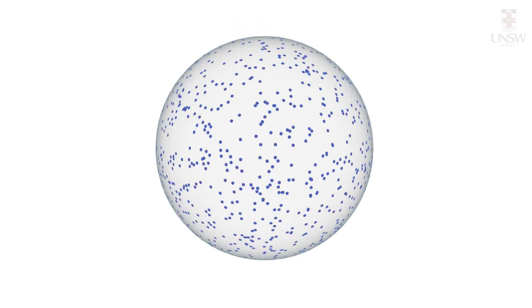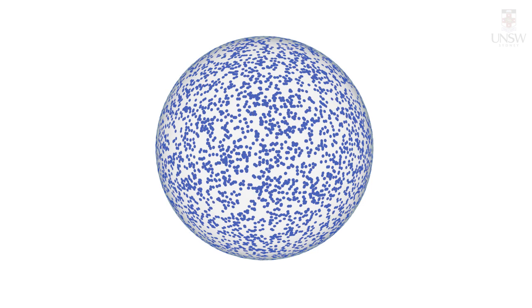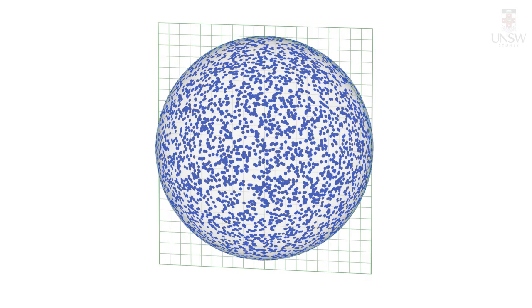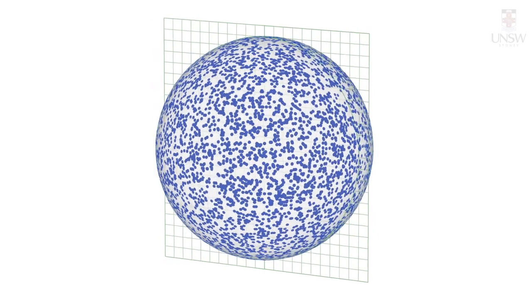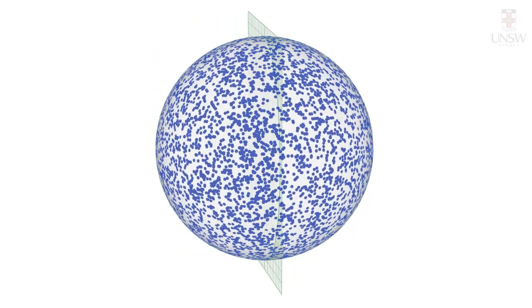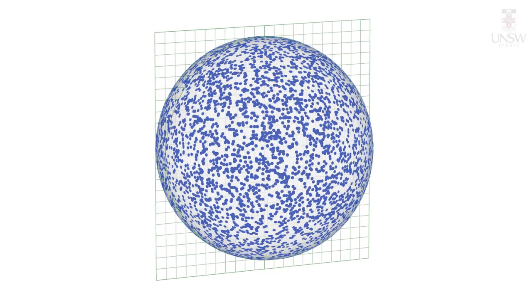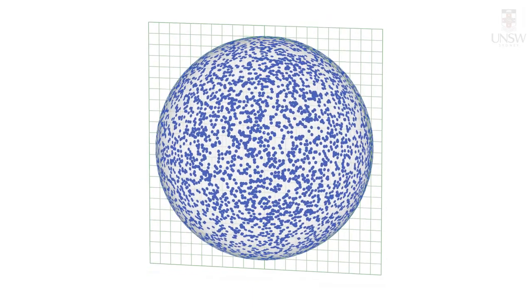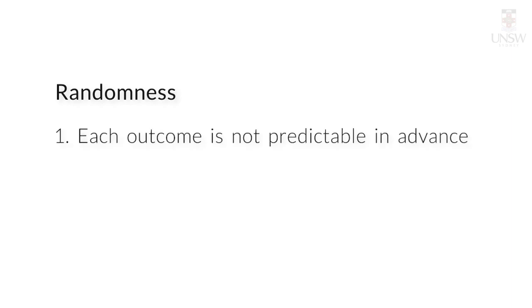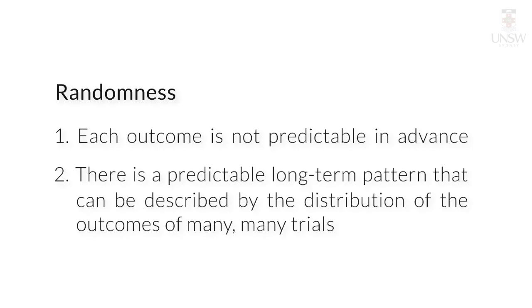Did you notice over time that a pattern emerged? Probably not. You can see that the number of dots appearing on the front of the ball is about the same as the number of dots on the back of the ball. This is exactly our definition of randomness: each outcome is not predictable in advance. However, there is a predictable long-term pattern that can be described by the distribution of the outcomes of many, many trials.